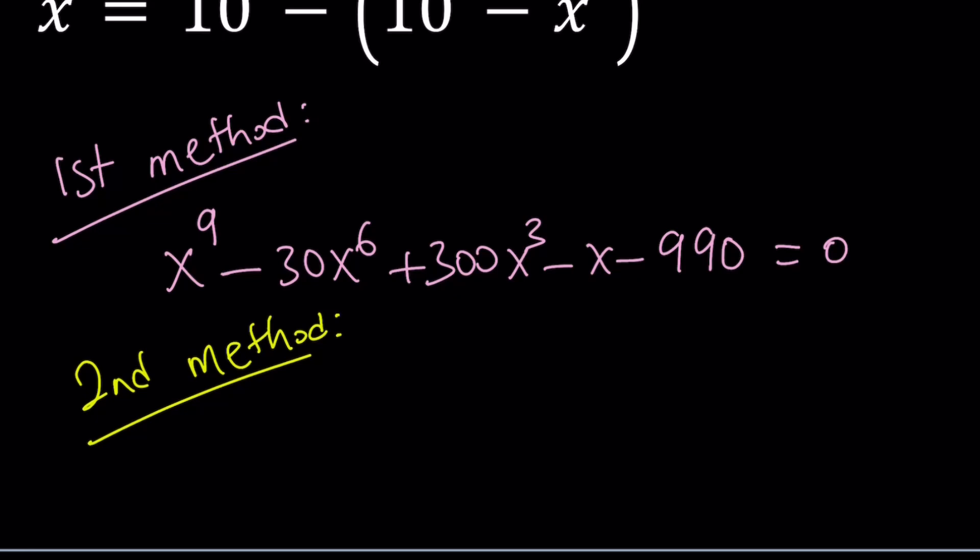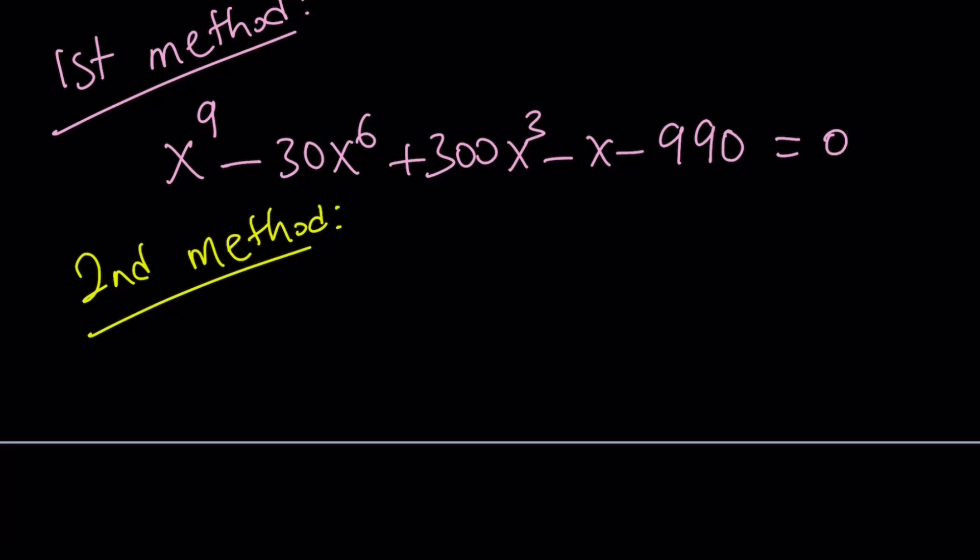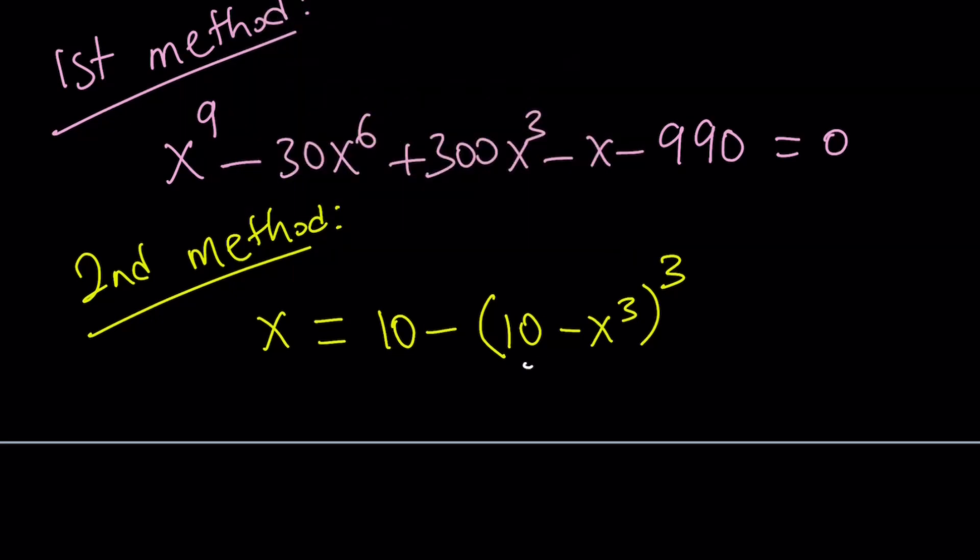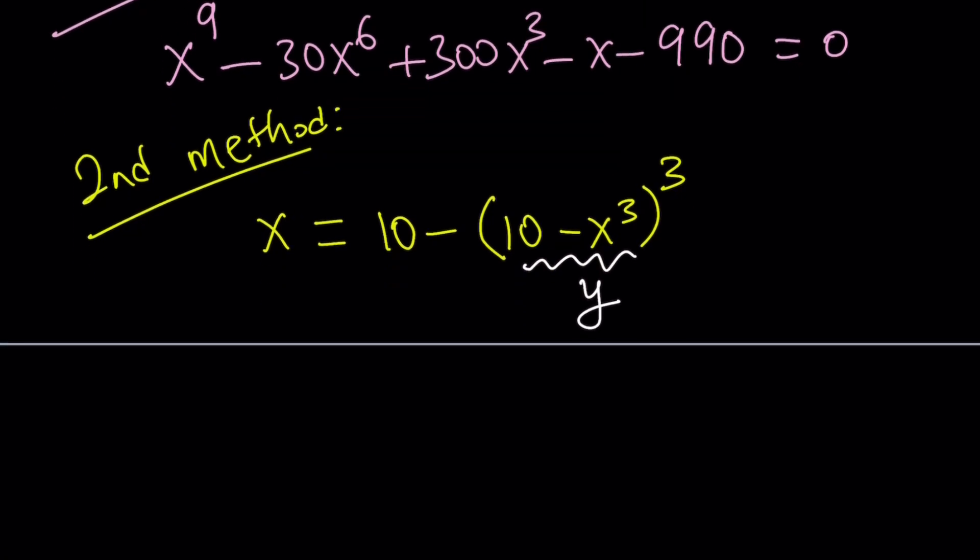The name of the second method is substitution to the rescue. So let's rewrite the original problem. Now we're going to go ahead and replace 10 minus x cubed with something. How about y? If you call that y, we're basically saying that y equals 10 minus x cubed.